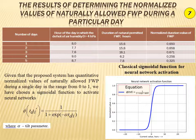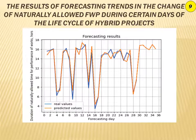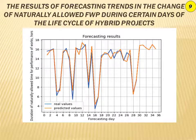A sigmoid activation function was chosen to activate neural networks. The proposed structure of the neuron includes a single static input equal to 1 that reflects the threshold value of the neuron. To predict the fund for work performance, based on experiments, the rational structure of the neural network was determined: 5 inputs representing the values of the duration of natural allowed time to perform work in the 5 previous days, and 2 hidden layers with 5 neurons. To train the neural network, statistical data of the summer months of 2020 on the natural allowable time of work during certain days, typical for the conditions of the Volodymyr-Volensky district of the Volodymyr region, were used.